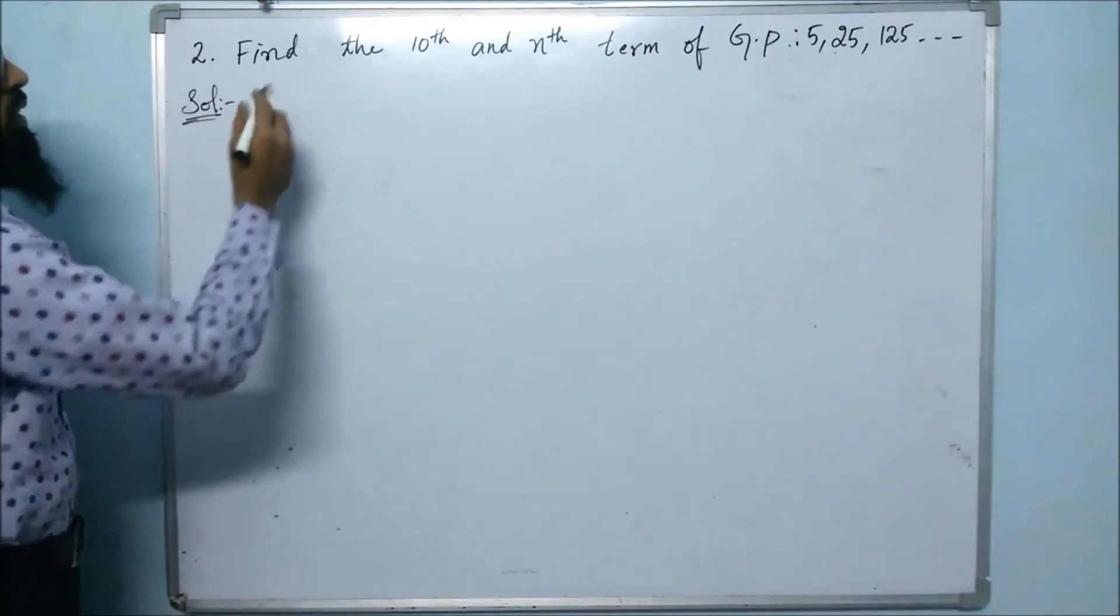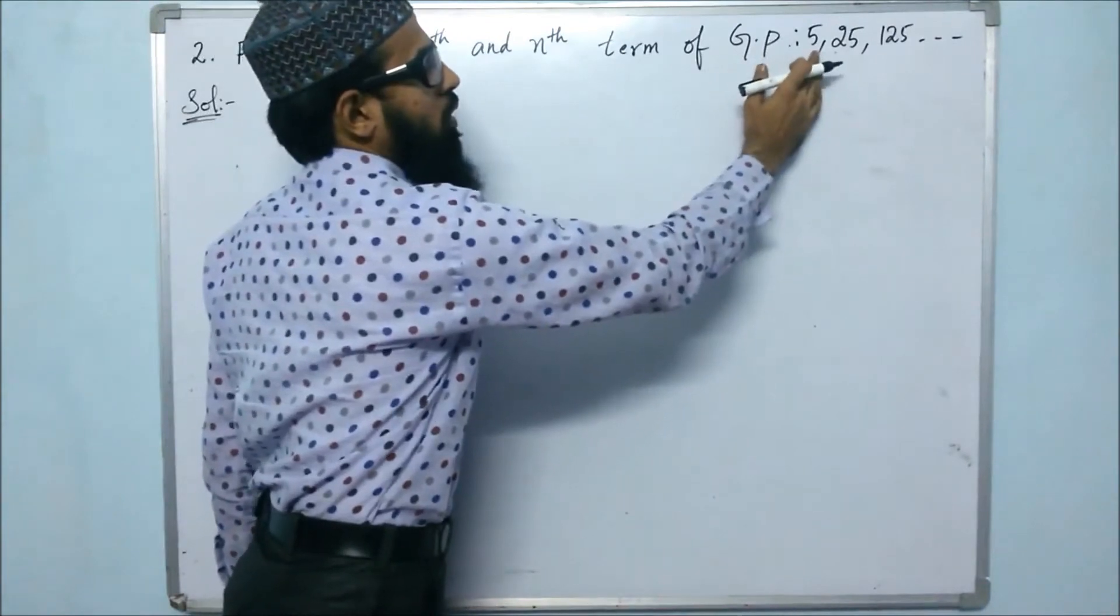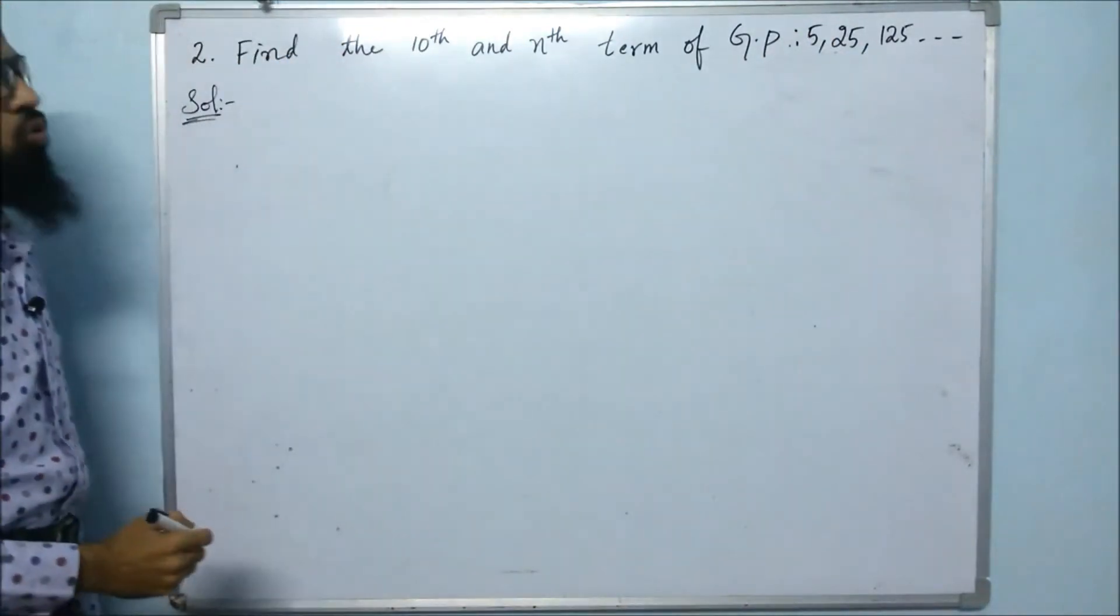This is the second problem. Find the 10th and nth term of GP: 5, 25, 125, and so on.